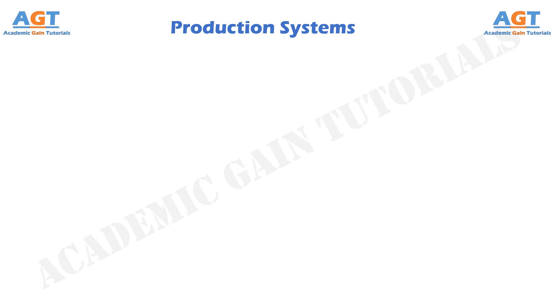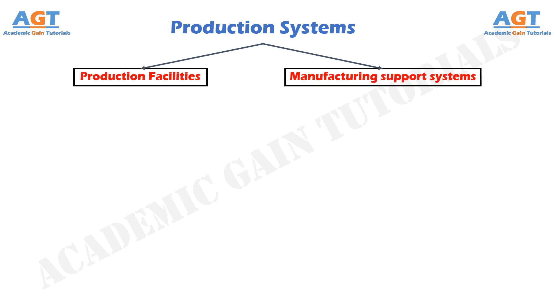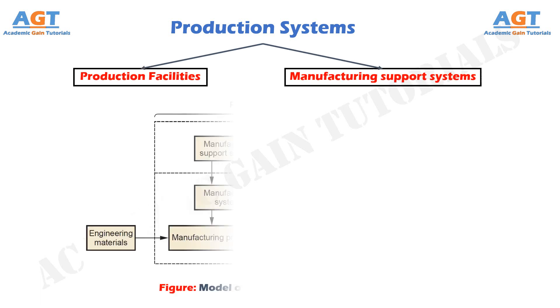Production systems can be divided into two categories: production facilities and manufacturing support systems, as shown in this figure.